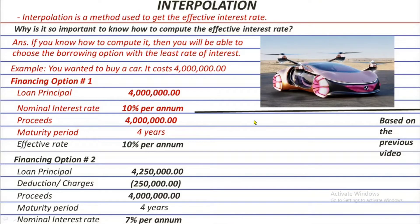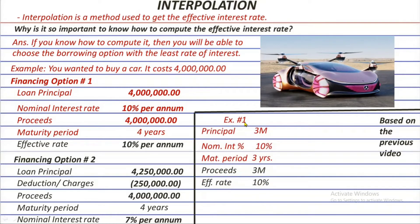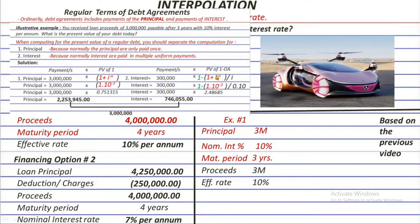Based on the previous episode, we made 2 sample situations. In example number 1, a debtor applied for a loan with a principal of 3 million, a nominal rate of 10%, and a maturity period of 3 years. The proceeds received by the debtor was also 3 million, equivalent to the principal. The effective rate was 10%, equal to the nominal rate — this is always the case when proceeds equals the principal. We proved that using 10% as the rate, the present value of the principal plus the present value of the interest equals the principal.